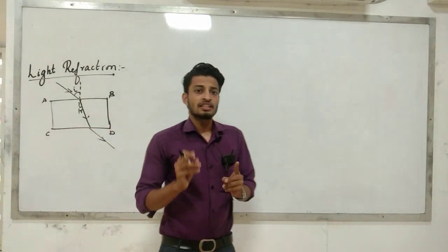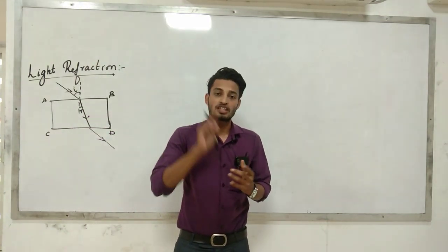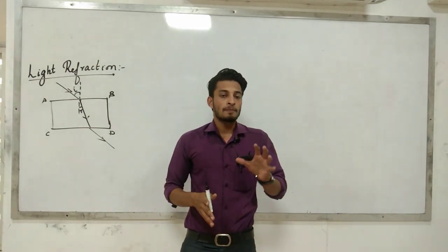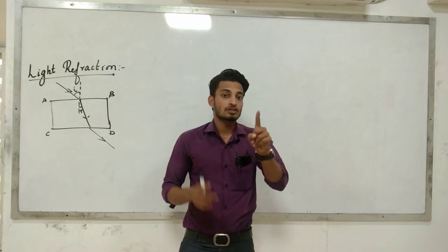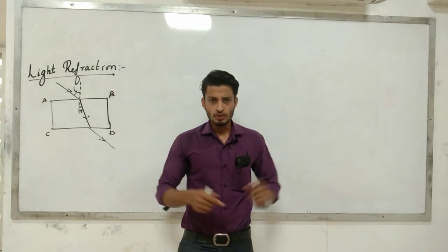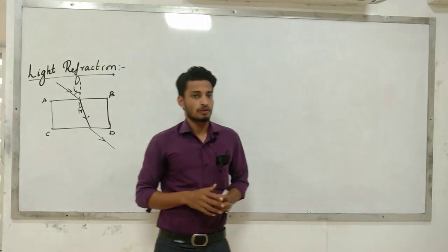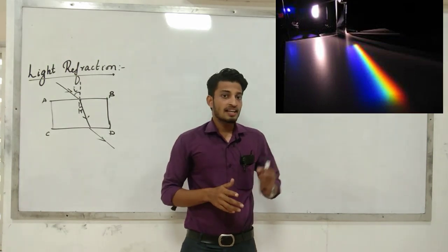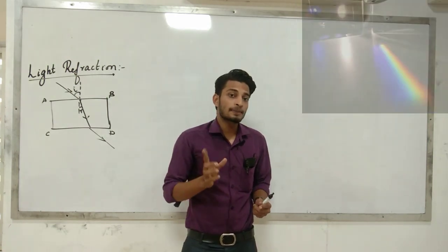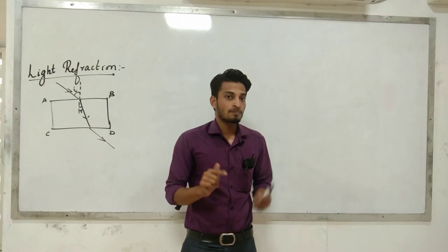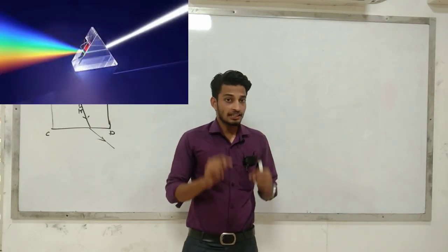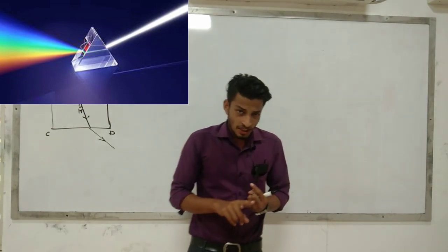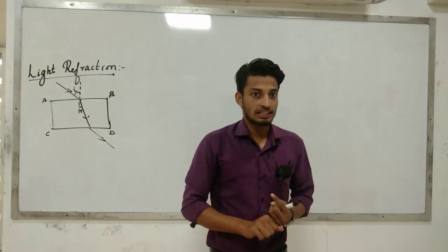Refraction depends upon the medium — that is, the speed changes as light enters a different medium. For example, if white light passes through a glass prism, it splits because white light has 7 colors, and those 7 colors have 7 different speeds as they travel through the glass prism.